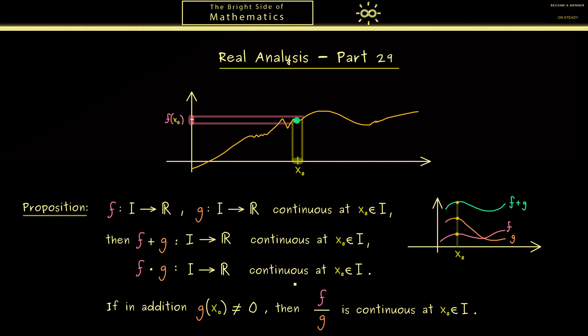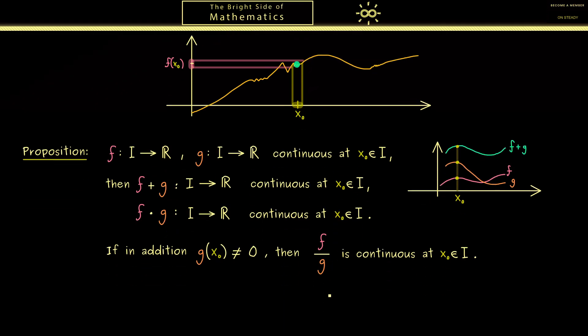Okay so this is our result, we have different combinations of functions but the continuity stays. This will be very helpful therefore I advise you try to write down the proofs.